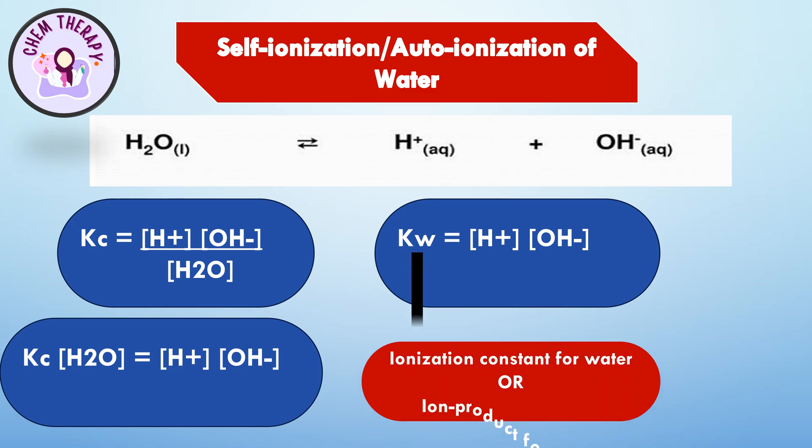Kw is known as the ionization constant for water, or the ion product for water. It is equal to the concentration of hydrogen ions multiplied by the concentration of hydroxyl ions: Kw = [H⁺][OH⁻].